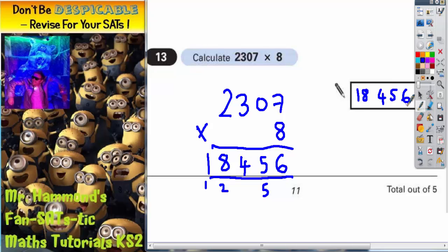It's always a good idea to count three digits from the end—one, two, three—and put a comma to separate the thousands from the hundreds. Final answer: 18,456.